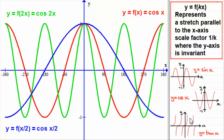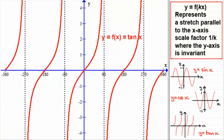That covers cosine x and its transformations under y equals f of kx. Now we're going to look at the graph of y equals tan x. Here is the graph of y equals tan x, with f of x as tan x. It has asymptotes at minus 270, minus 90, 90 degrees, and 270 degrees — where the curve heads off towards but never crosses those dotted lines.